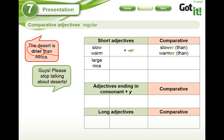For words like 'large' and 'nice,' what are we gonna do here? We just add -r. So: 'larger than,' 'nicer than.' For example: Iquitos is larger than Tacna. And the teacher Katan is nicer than the teacher Falafi, for example.